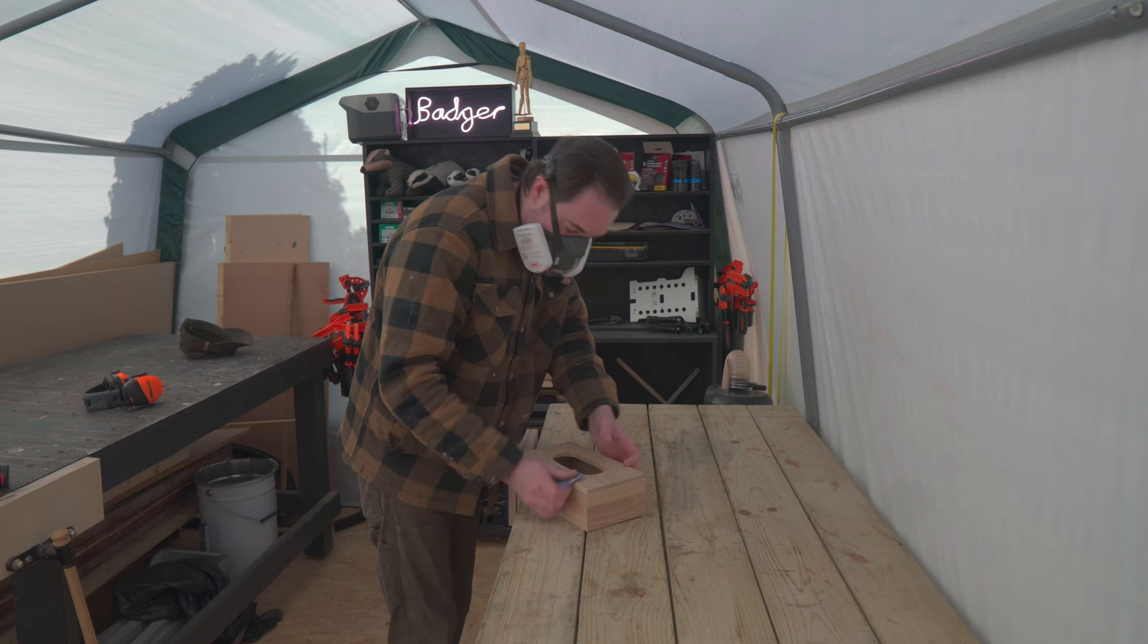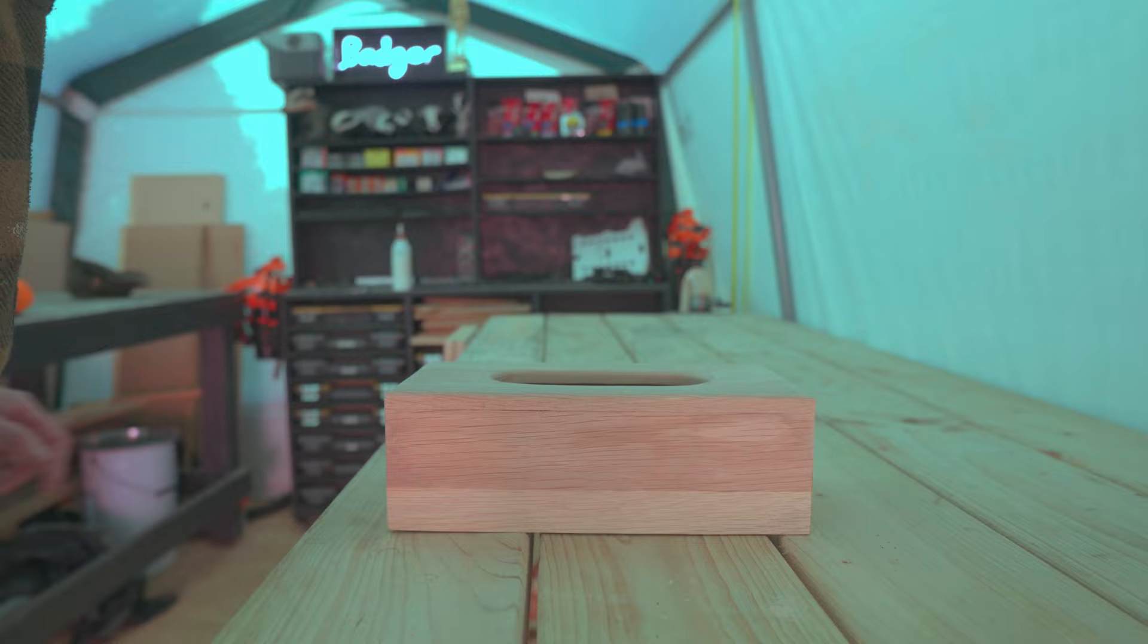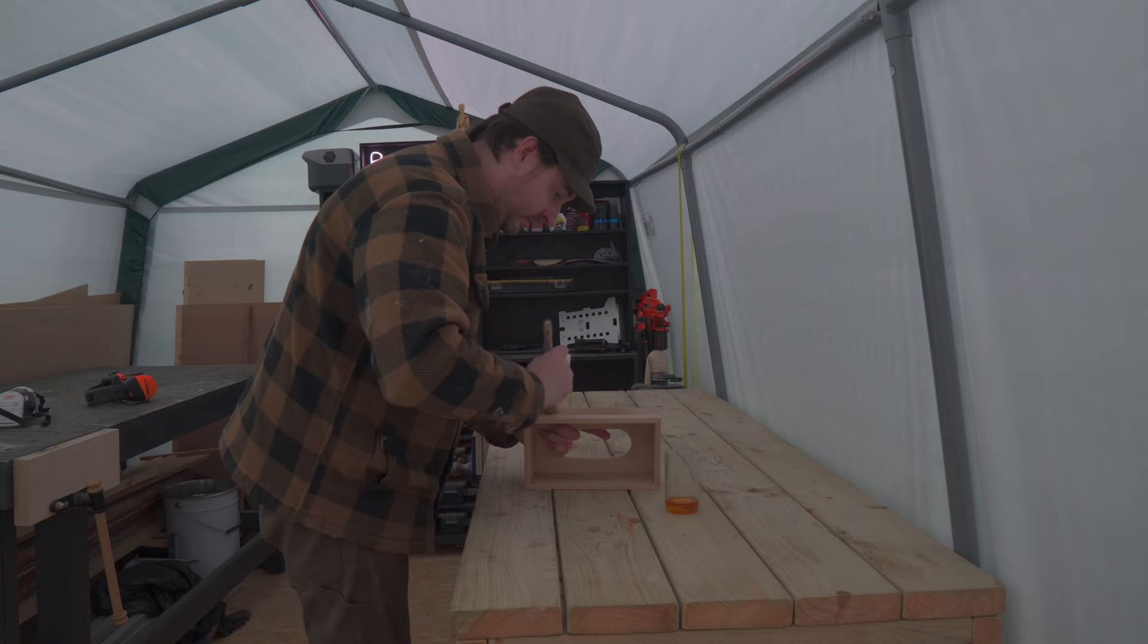I'm going to go over all those edges I've just routed, and now it's time for some finish. I'm going to go for some boiled linseed oil. It's probably one of the cheapest and easiest to apply finishes you can get. I brush it on, leave it to soak in for a while, and then just come back and wipe away any excess.